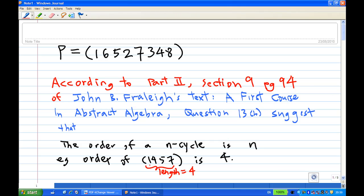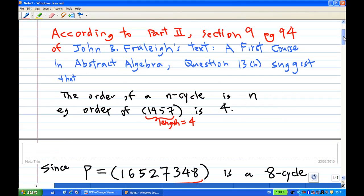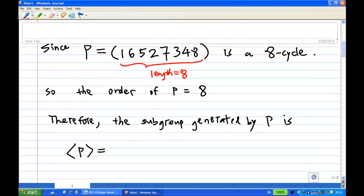For example, the order of a 4-cycle (1 4 5 7) is 4, which means that (1 4 5 7) multiplied by itself 4 times gives the identity. So we can apply this result here. Since P has length equal to 8, it is an 8-cycle. Therefore, the order of P equals 8.